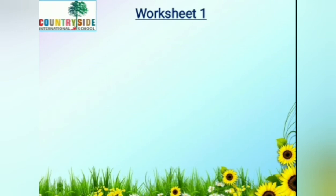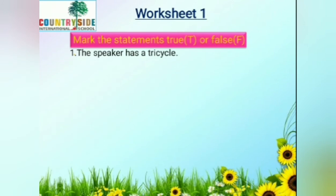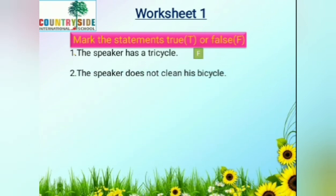Now let's move on to Worksheet 1. Mark the statements true or false. First: the speaker says in the very first line of the poem, 'I have a bicycle.' So this is false. Next: the speaker does not clean his bicycle. This is also wrong because the speaker said 'I love to ride it, I keep it clean.' So this one is also false.